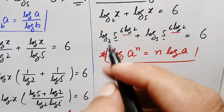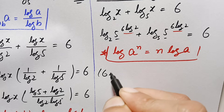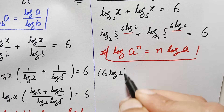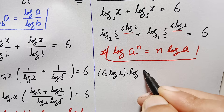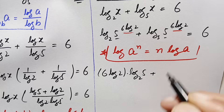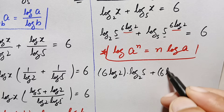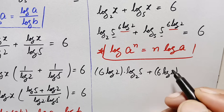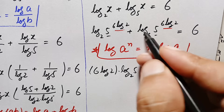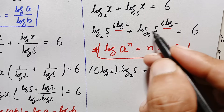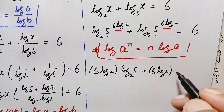The left hand side becomes: 6 times log of 2 times log of 5 with base 2, plus 6 times log of 2 times log of 5 with base 5. Since log of any number with the same base equals 1, log of 5 with base 5 becomes 1.